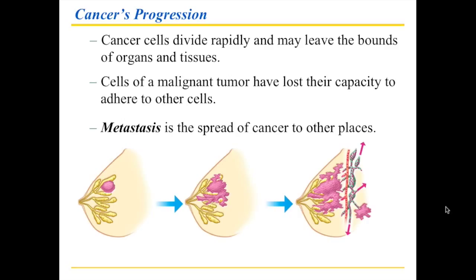Metastasis is the spread of cancer from its original locale to one or multiple other locales in the body. This is one of the really big problems with cancer treatment, because even if you find the area where the cancer originated, the question is whether some cells have already spread through metastasis to other parts of the body — and then the cancer may start over again.